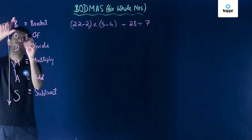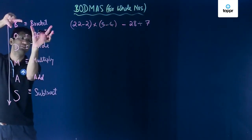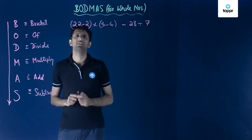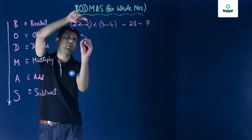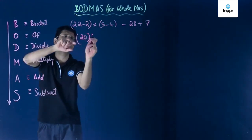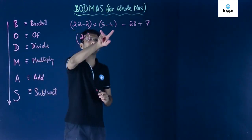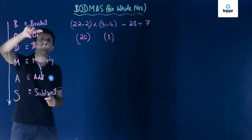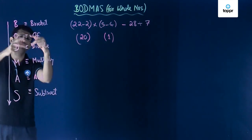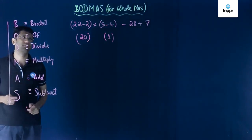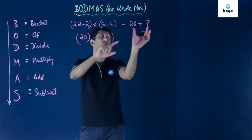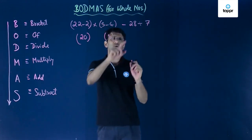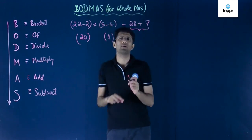The BODMAS method says we start with brackets, since B comes first. The bracket here is 22 minus 2, which resolves to 20. Then we resolve the other bracket, 5 minus 4, which gives us 1. Both brackets have been resolved. Since there is no 'of' term, we move to the next operation: division. We divide 28 by 7, which gives us 4.